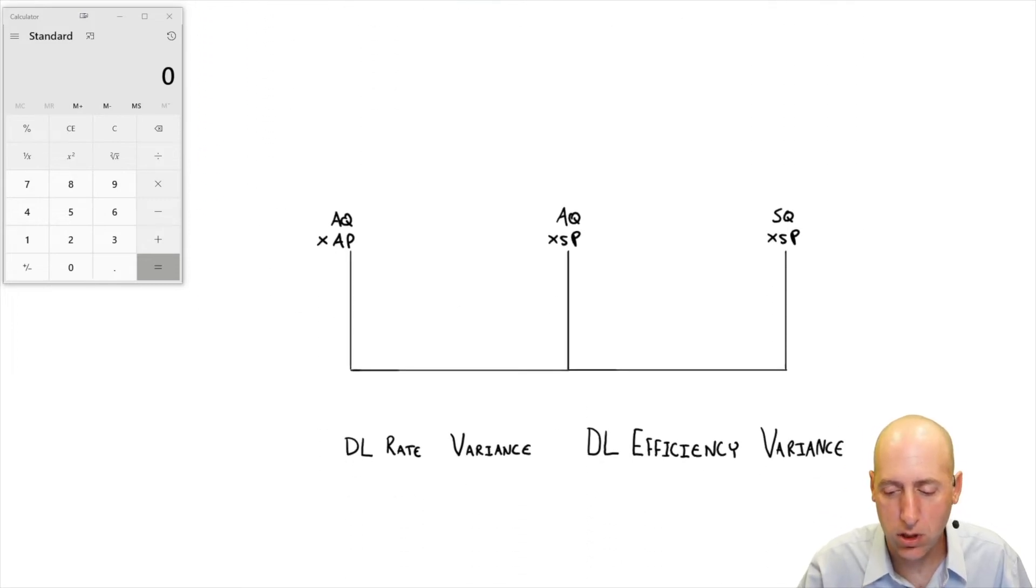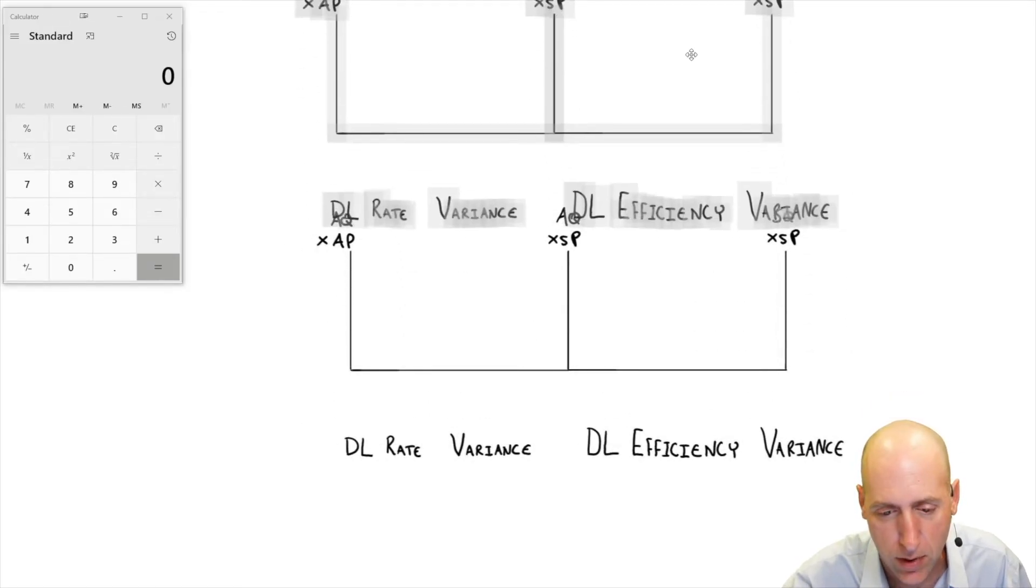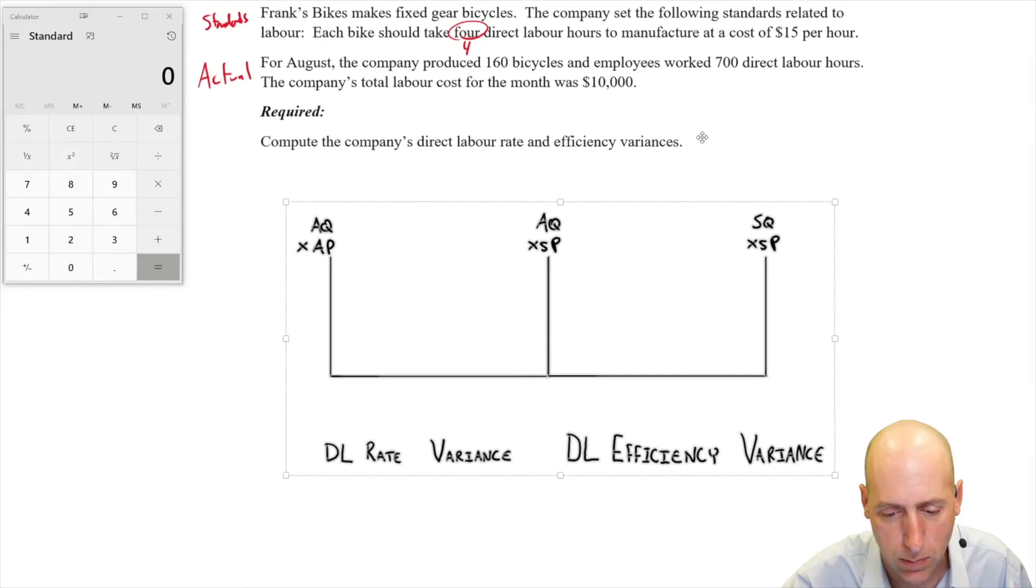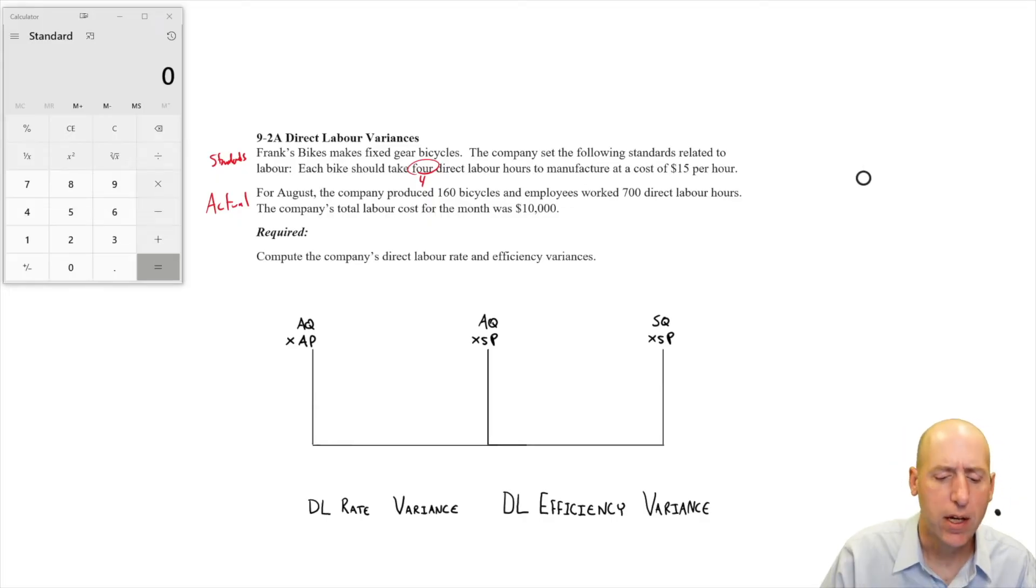I'd encourage you to do it in this format that I've done for material. I think this will serve you well for labor and for our overhead variances when we get to them. Let me just scroll this up and put everything on the same screen at the same time. So AQ times AP. The Q in AQ, the quantity for labor is always hours. That's the quantity for labor.